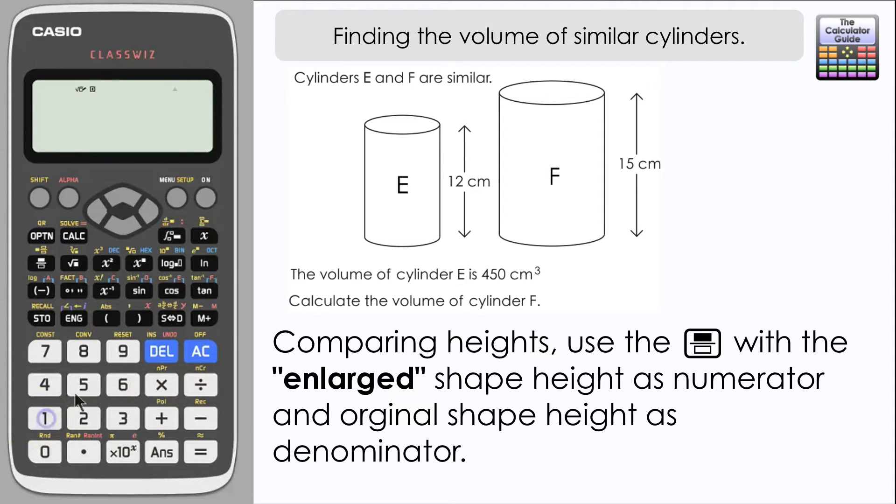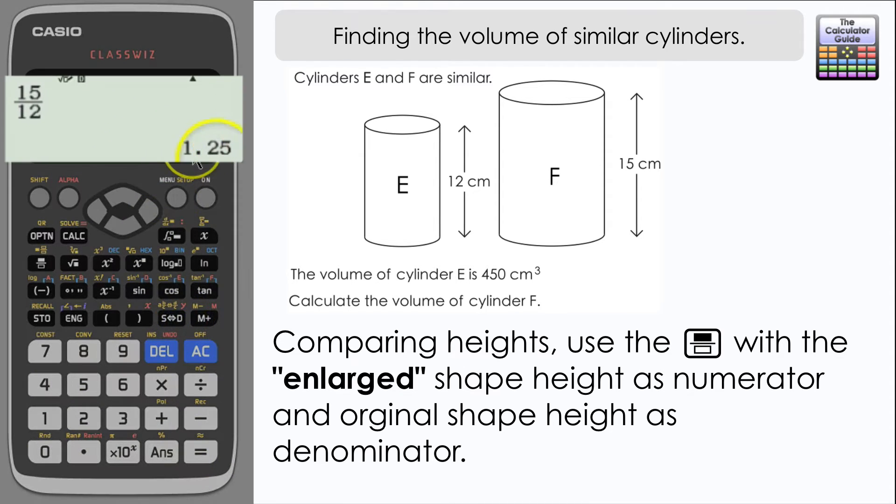We're going to have 15 on the top and 12 on the bottom. So we have a scale factor of 5 over 4, 5 quarters, or we'll use it in decimal form 1.25.